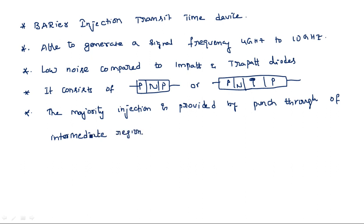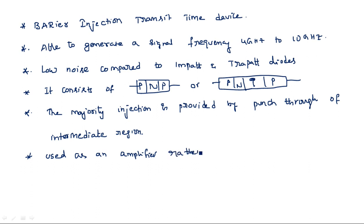Punch-through means channel breakdown. The BARITT diode is mainly used as an amplifier rather than an oscillator. This is the story behind the BARITT device.